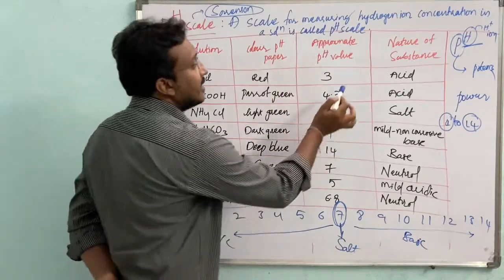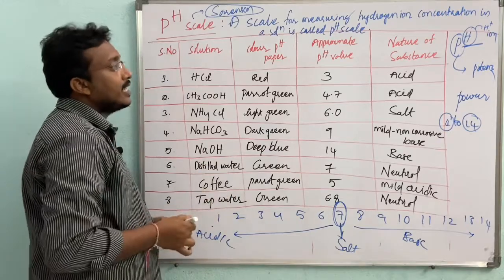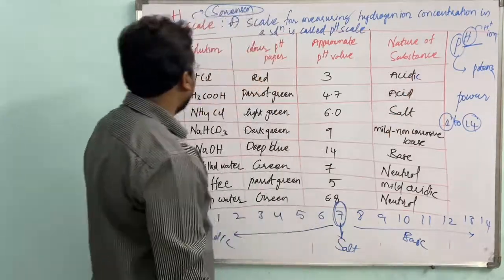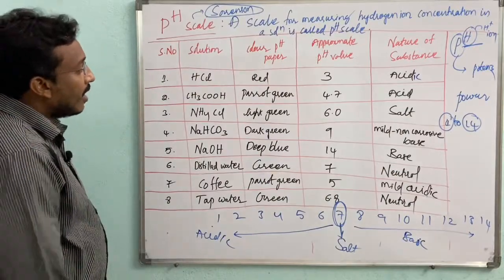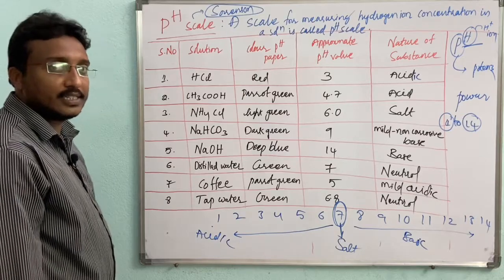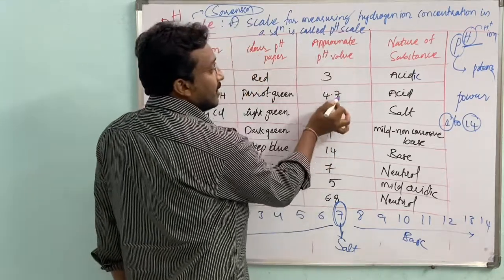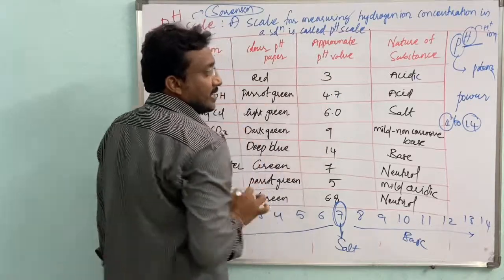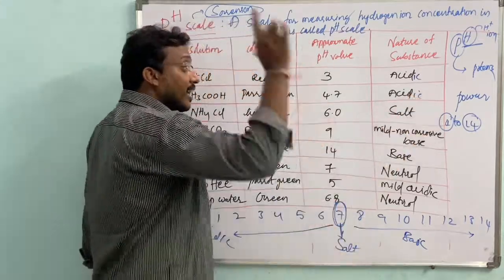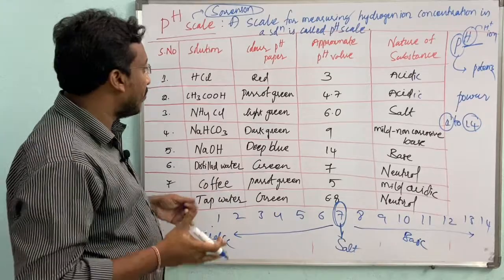The approximate pH value of HCl is 3, which means it is acidic in nature. For acetic acid (CH₃COOH), the approximate pH value is 4.7, so it is also acidic in nature. In our last class, we discussed that the brightness of a bulb decreases with CH₃COOH solution compared to HCl.